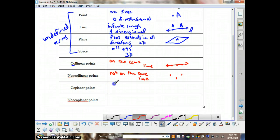Coplanar points are points that are on the same plane. So to represent that, we would draw a plane by drawing our parallelogram shape and just put the points on the same plane. So these are three non-collinear points because they're not on the same line, but they are coplanar points because they're on the same plane.